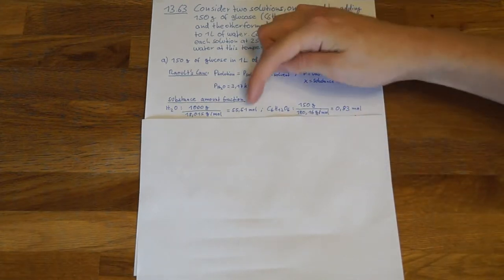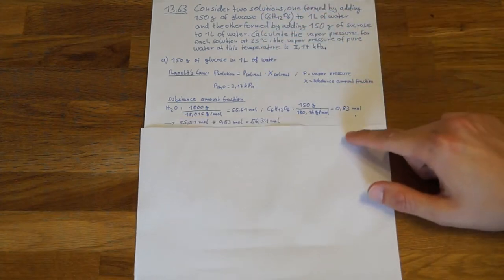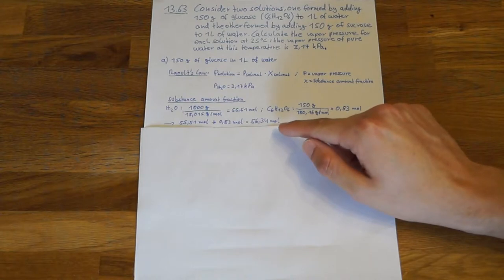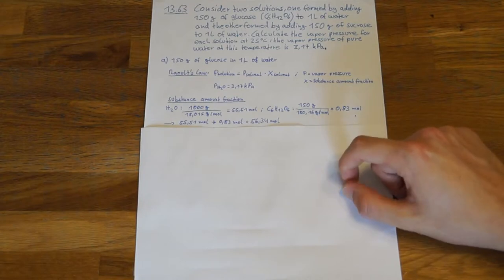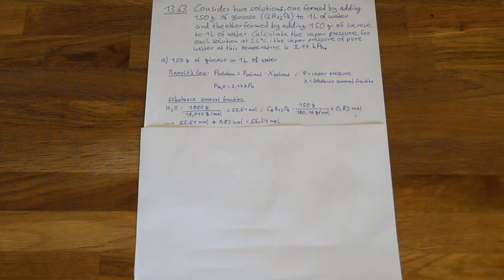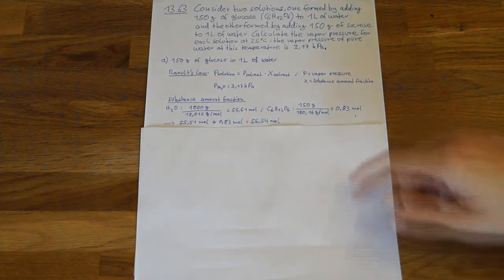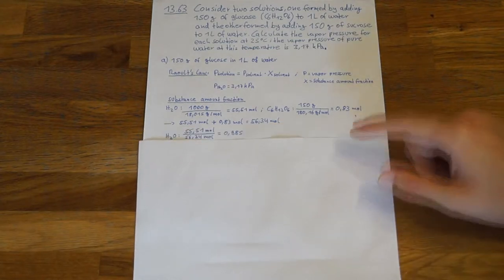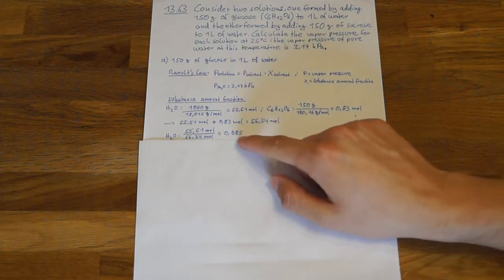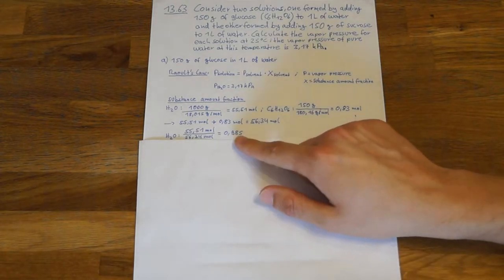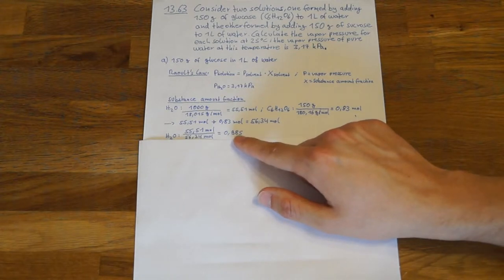We add the moles together to get the total amount of moles, which is 56.34. Then, to get the substance amount fraction, we divide the amount of moles of our solvent by the total amount of moles in our solution. So, 55.51 moles of water divided by a total of 56.34 moles shows us that the substance amount fraction of water is 0.985.